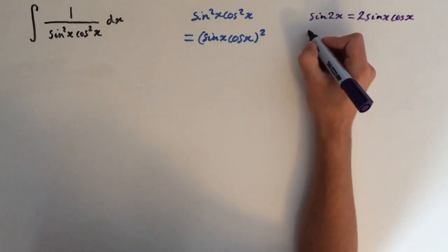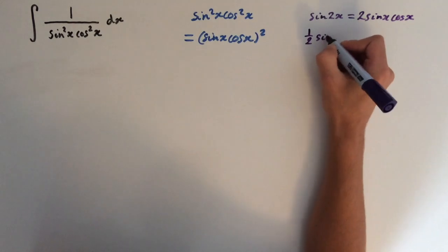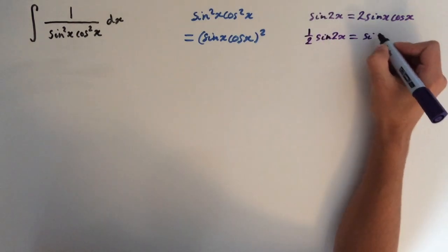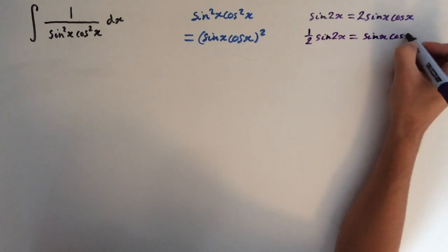Now if we divide both sides by 2, this will give us half sine of 2x. This equals sine of x times cosine of x.